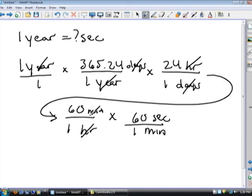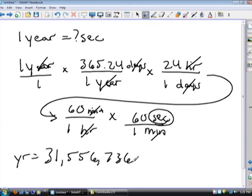And you can go back and check your steps. The years cancel. Days cancel. Hours cancel. And the minutes cancel. So you're left with seconds. And after you type that in your calculator carefully you have one year equals 31,556,736 seconds per year.